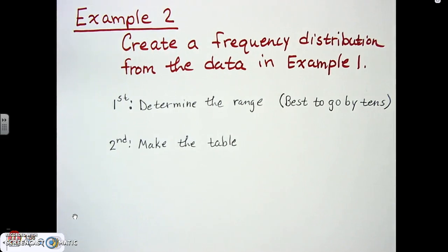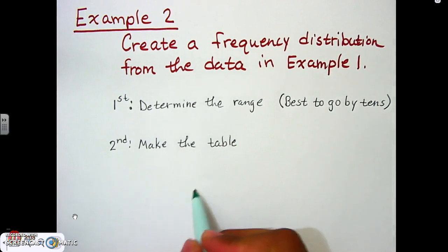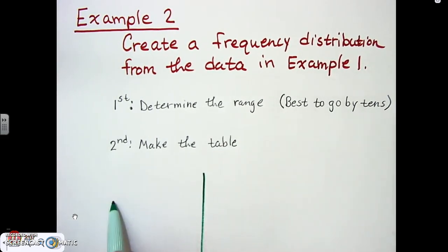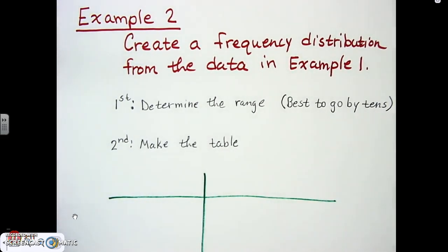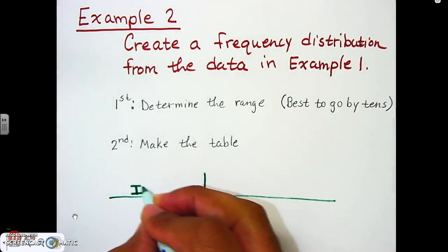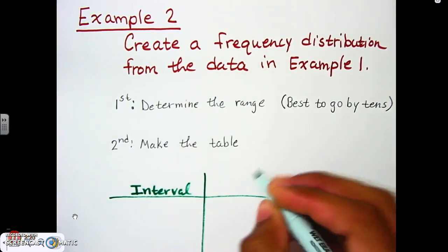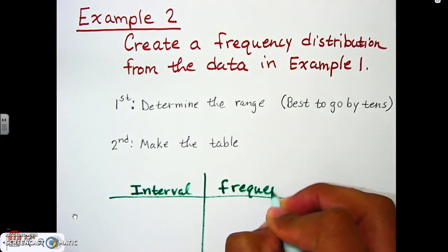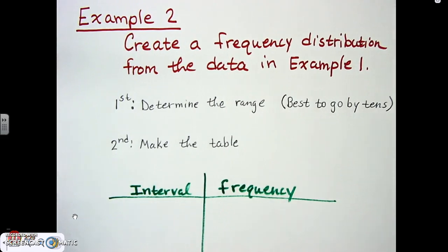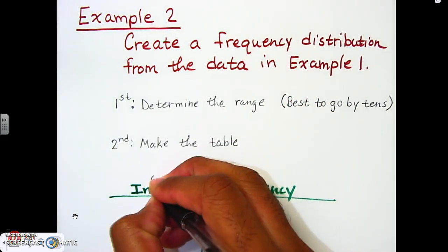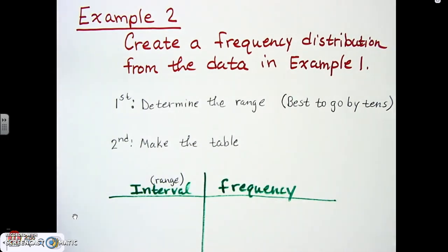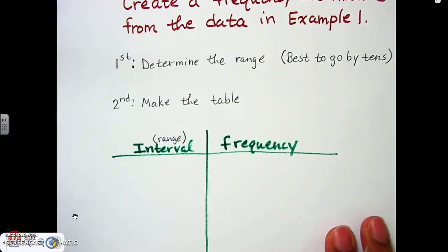Next, we're going to make a table. I'll start off similarly to what we did with the stem-and-leaf plot and make a box around it. We need two parts: one labeled 'interval' and one labeled 'frequency.' Frequency here is talking about how many numbers are in that range or interval — range and interval mean the same thing. Frequency is how many times a number falls in that range.